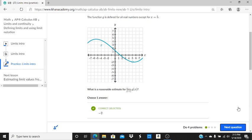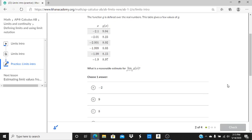Alright, let's look at the next question. Function g is defined over the real numbers. The table gives a few values of g. What is a reasonable estimate for the limit as x approaches negative 2 of g of x? So we can see as we're getting closer to negative 2 from this side, from the positive side, we're getting close to 8. And as we're approaching negative 2 from the negative side, we're also getting close to 8. So a reasonable estimate is that the limit as x approaches negative 2 of g of x is 8.